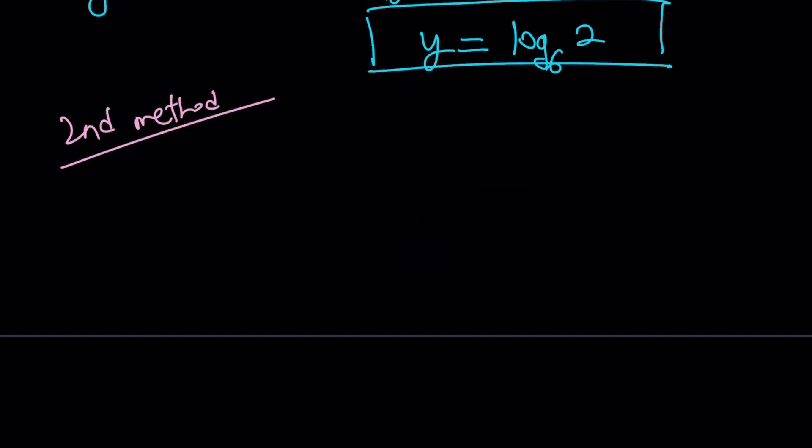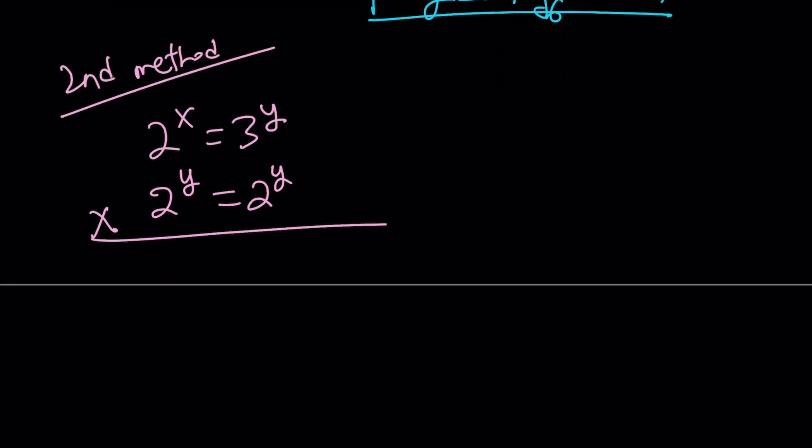For my second method, I'm going to use a different approach. We know that 2 to the x is 3 to the power y, and I also know that x plus y is equal to 1. So how can I take advantage of x plus y? Why not multiply this equation by 2 to the power y equals 2 to the power y? If you multiply these two equations, we are actually multiplying both sides by 2 to the power y.